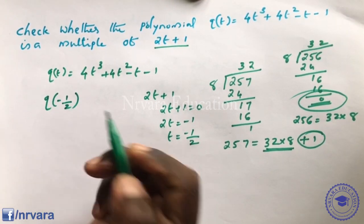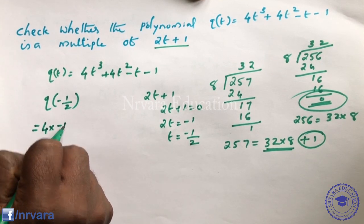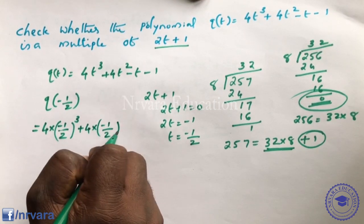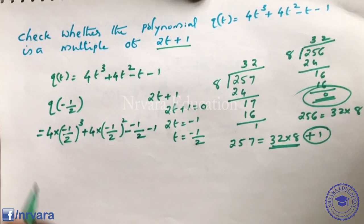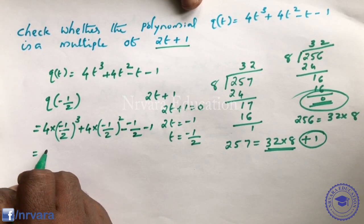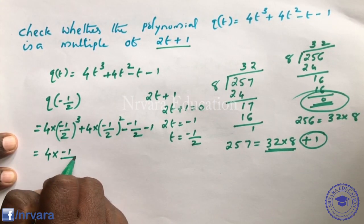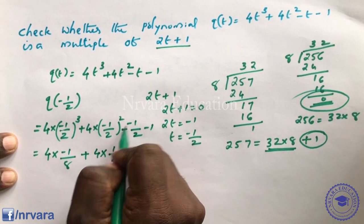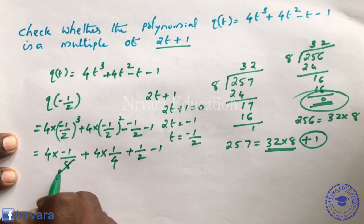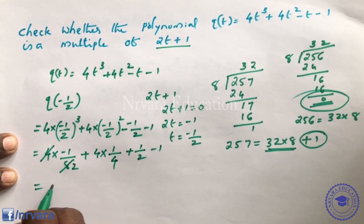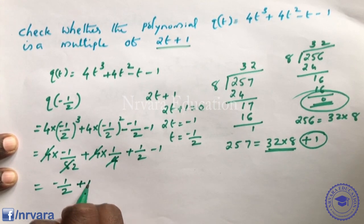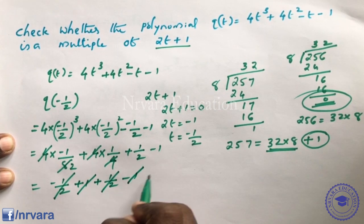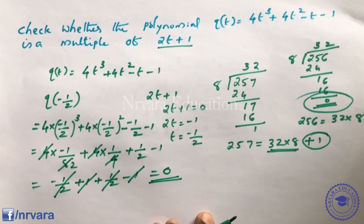Evaluate q(-1/2): 4 × (-1/2)³ + 4 × (-1/2)² - (-1/2) - 1. That is 4 × (-1/8) + 4 × (1/4) + 1/2 - 1 = -1/2 + 1 + 1/2 - 1 = 0.